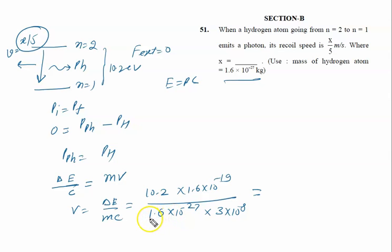1.6 is canceled, and this is 10.2, so you can write it as 102×10^-20. Then it is 3×10^27 and this is 8, so 10^-19. Finally it is v = 102/(3×10^-1).